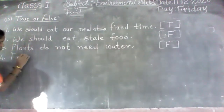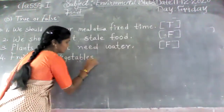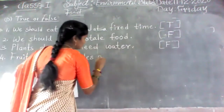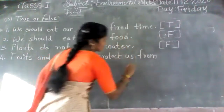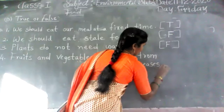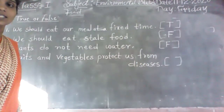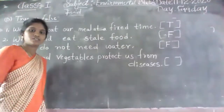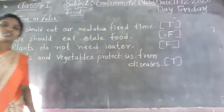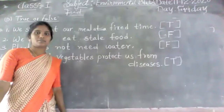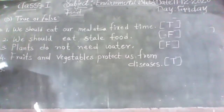Fourth one: fruits and vegetables protect us from diseases. Is this true or false? When we eat fruits and vegetables, they keep diseases away — they are good for health. So this is true.